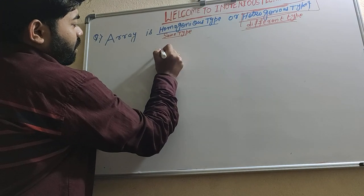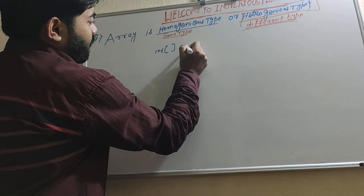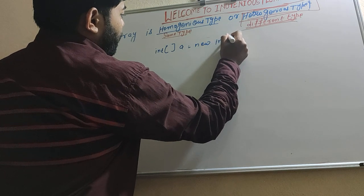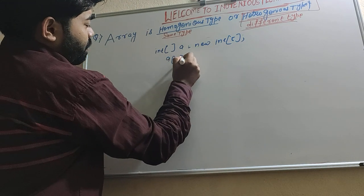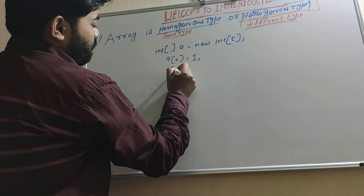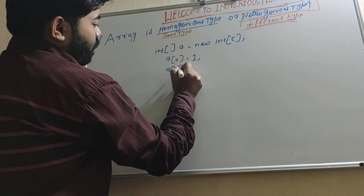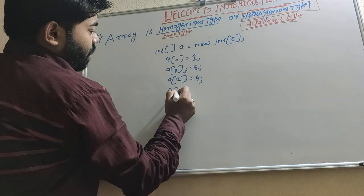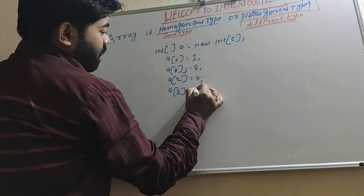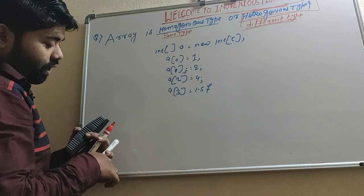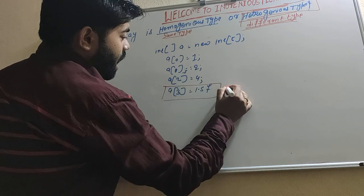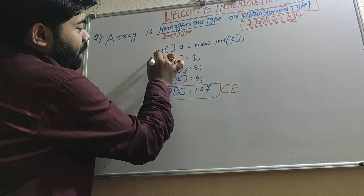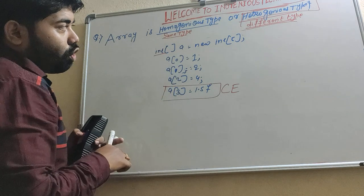If you create an int type of an array and we have given the size as 5, then if you store A[0] = 1, A[1] = 2, A[2] = 4, and A[3] = 1.5F, you will get a compile time error. Why? Because we cannot store a different type in the same array.